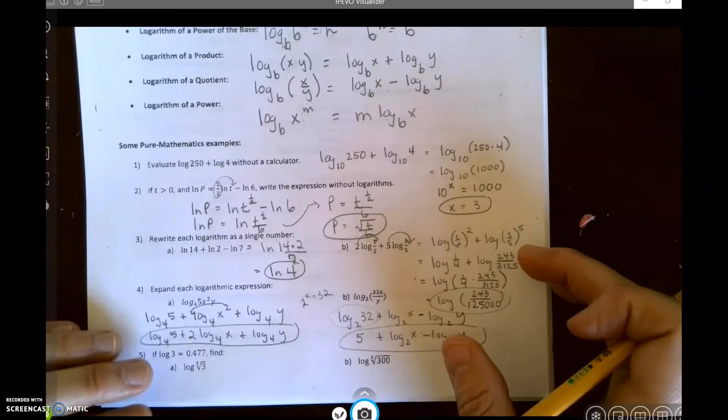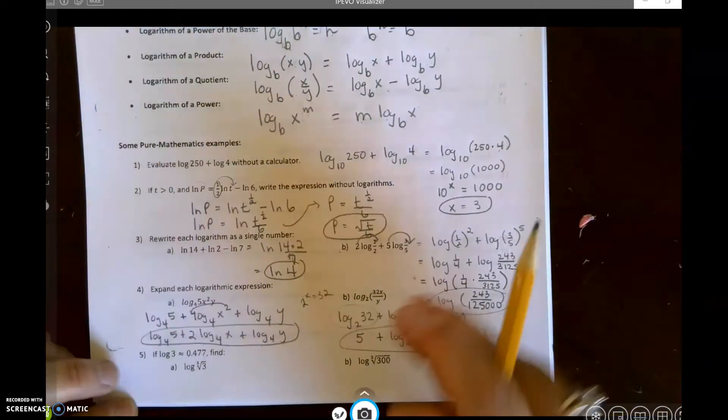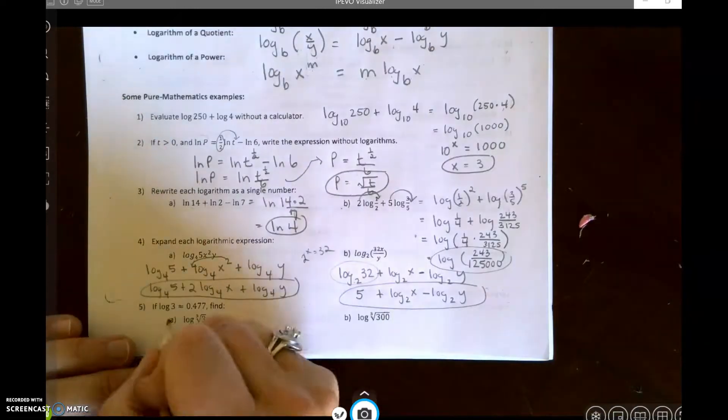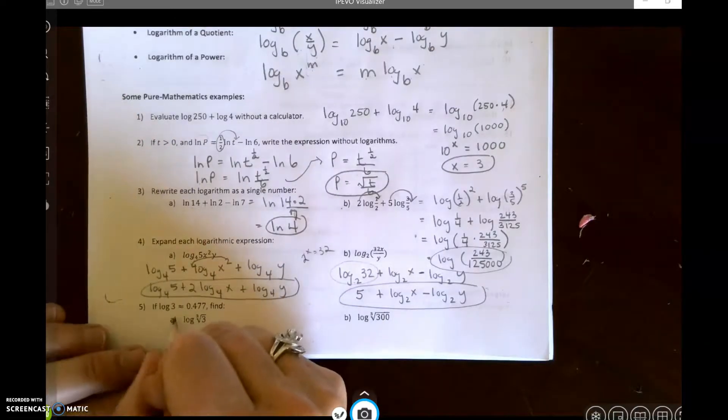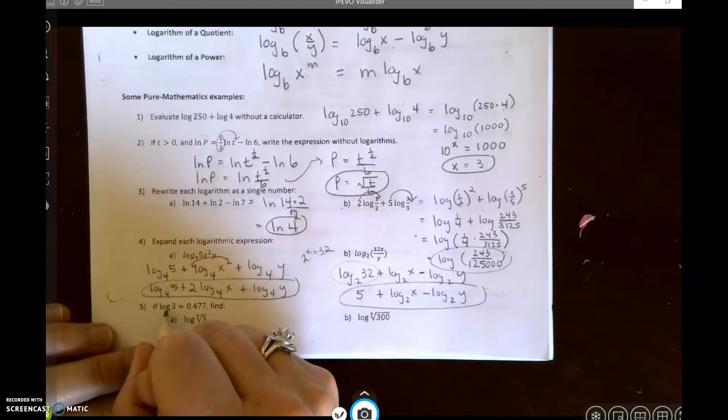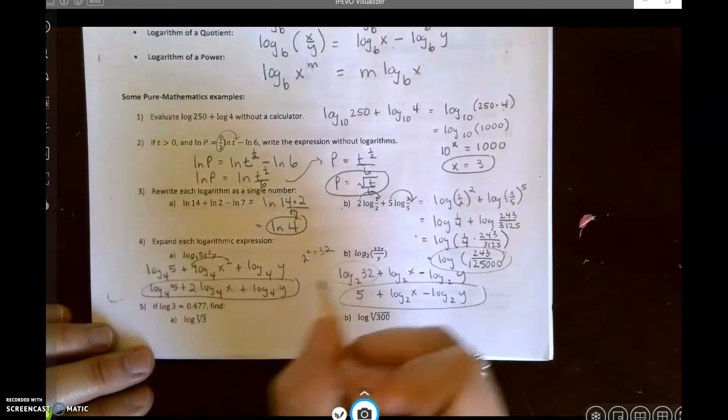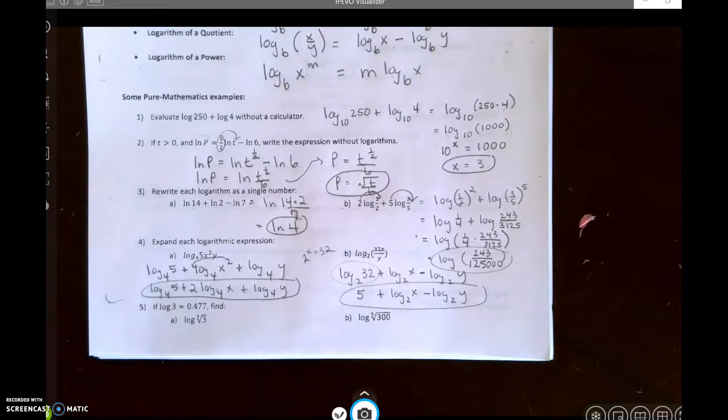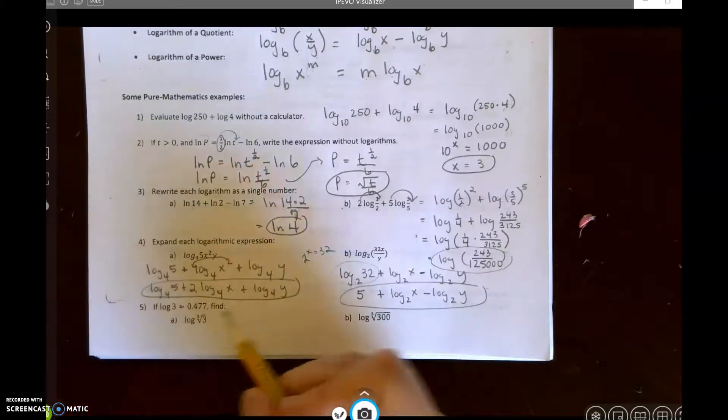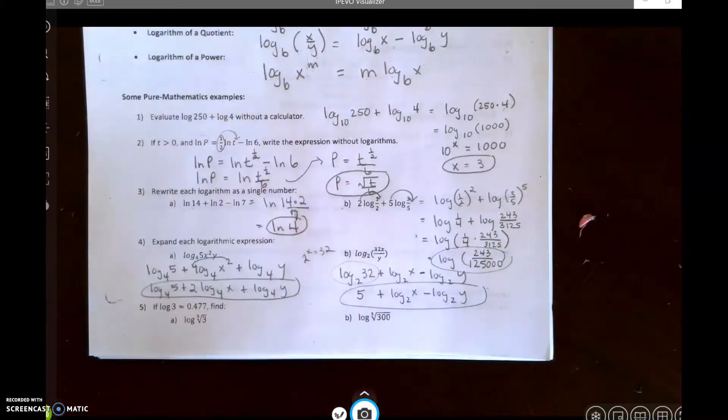We need to use the fact that the log of 3 is 0.477, which means I need to somehow have this rewritten where I just say log of 3.